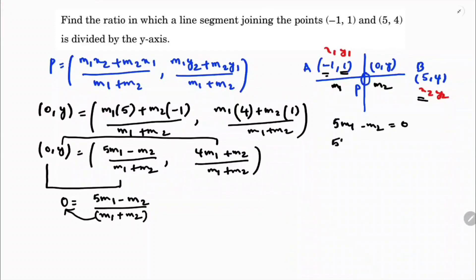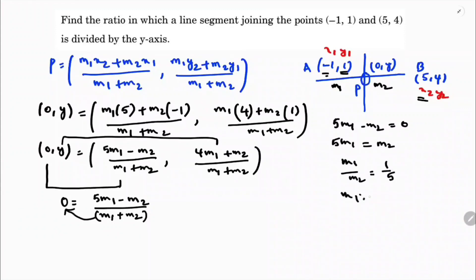So 5·m1 = m2, which means m1/m2 = 1/5, which is nothing but 1:5. The ratio is 1:5.